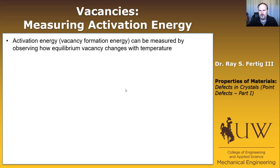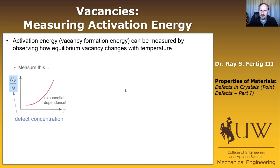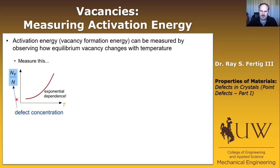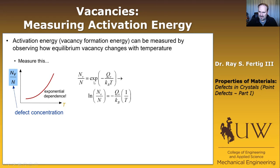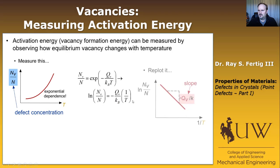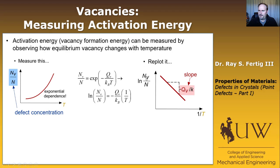The activation energy can be measured by observing how the equilibrium vacancy concentration changes with temperature. The equilibrium concentration goes up with temperature because increasing concentration increases entropy, and T controls how much entropy contributes to the Gibbs free energy. If we take the log of both sides of the equation, it becomes a linear equation. Replotting log of vacancy concentration versus 1/T gives a straight line, and we can read off the slope to compute Q_V, the vacancy formation energy.